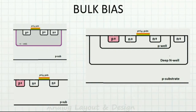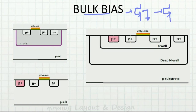Before getting into the latch-up phenomena in FDSOI, let's understand some basics — specifically bulk bias. Suppose I have an NMOS transistor. Normally the bulk is connected to ground, but if I instead connect the bulk to some positive voltage and increase it, what happens? This is the drain, gate, and source. If I increase this voltage, VTH will decrease. This is known as bulk bias.